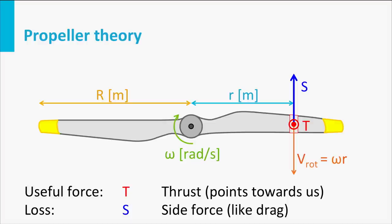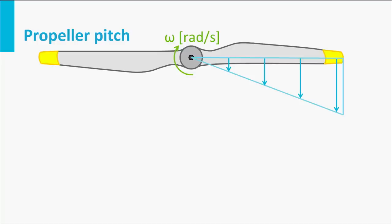The drag on the blade element is a side force — it is the cost we have to pay to generate the thrust. In this diagram, the thrust points toward us and the side force points backwards from the perspective of the blade element. Of course, the radius varies for different blade elements, which means we may need to change the angle of attack slightly for each element.